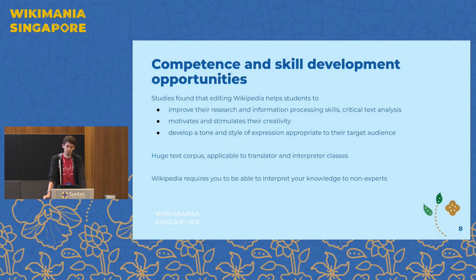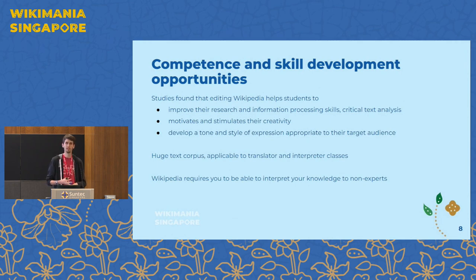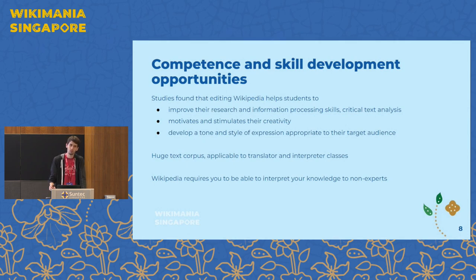About competence and skill development: Wikipedia itself is a platform for scientific communication, and university teachers can leverage this. Student assignments like seminar papers are great examples where editatons can be implemented in higher education, because writing a seminar paper is very much like editing Wikipedia. Both require analyzing the topic, doing research, collecting reliable sources, and summarizing findings. Studies found that editing Wikipedia helps students gain necessary competences, and it also motivates them because their work becomes publicly visible.